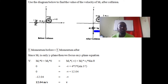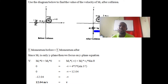The diagram already showed that the velocity is going down, so the answer is 12.04 meters per second. We did not need the x plane because the unknown velocity had no x-component.